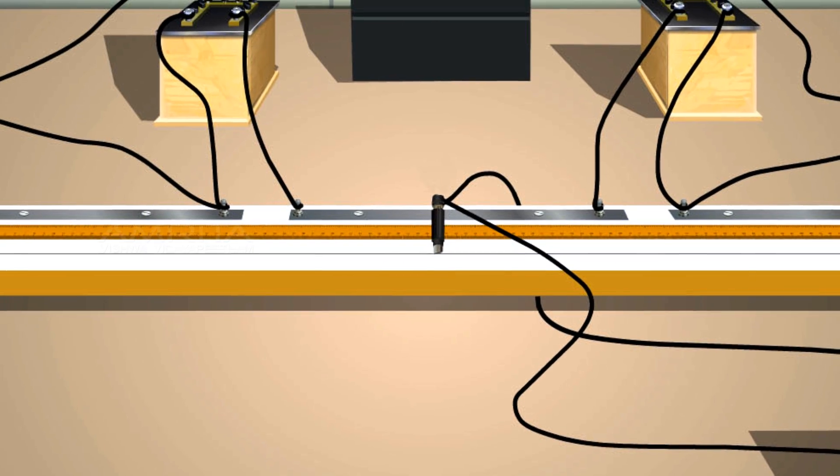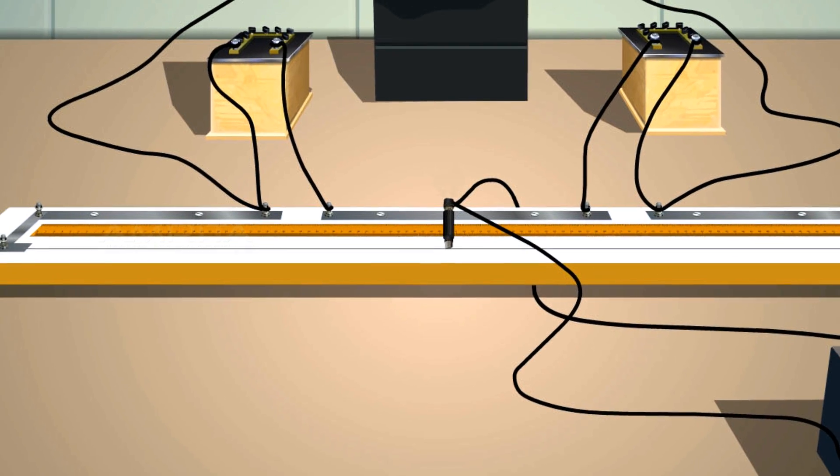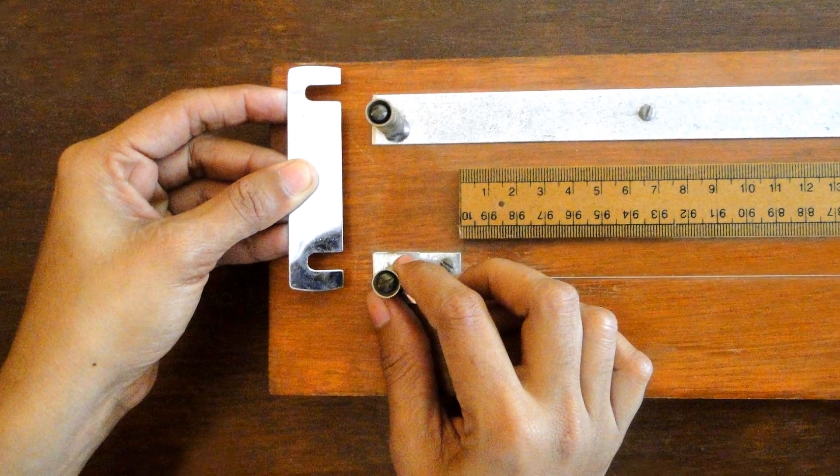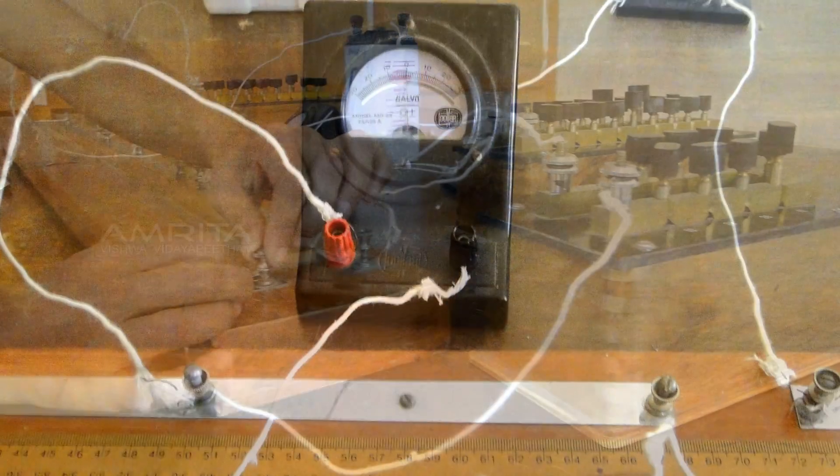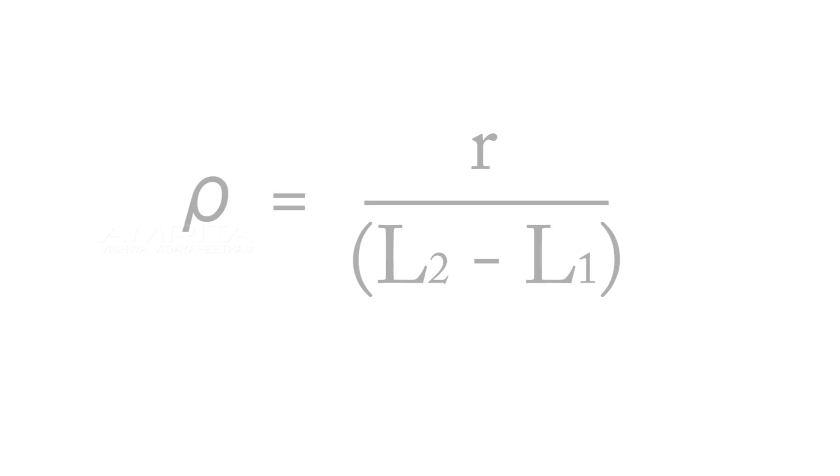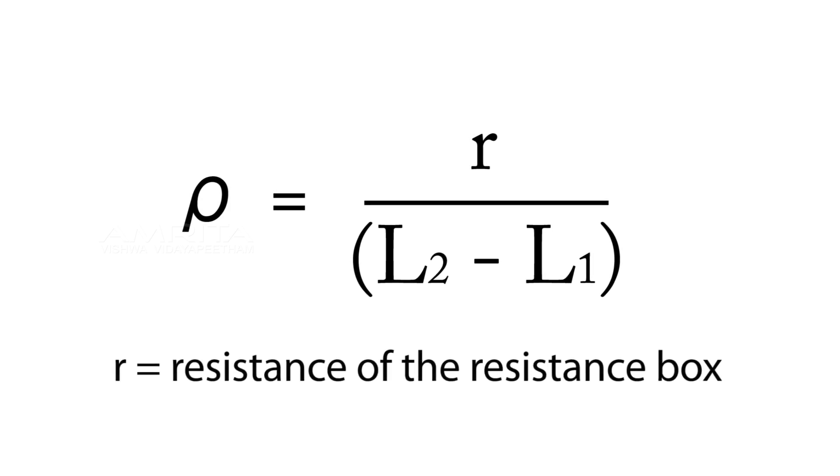Take the length from the left end to the balancing point of the bridge wire. This is L_1. Interchange the position of the copper strip and resistance box and find out the balancing length L_2 using the previous step. Apply L_1 and L_2 in the equation and find rho. Rho is equal to R divided by the difference of L_2 and L_1.